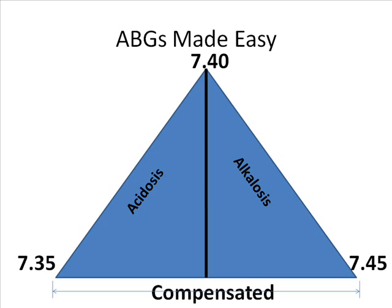Right smack dab in the middle there is 7.40. Anything less than 7.40 is acidosis, and anything greater than 7.40 is alkalosis. Now if we're less than 7.40 but still above 7.35, we have a compensated acidosis — we're compensated because we're not outside of the normal range yet.